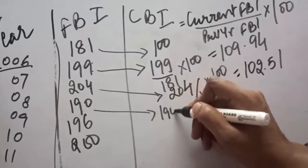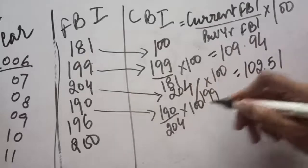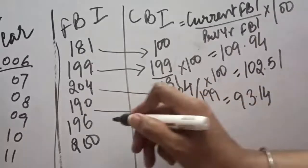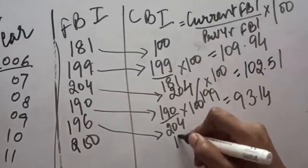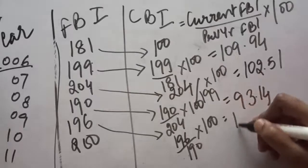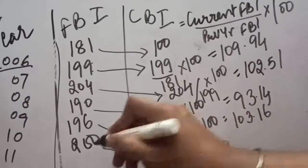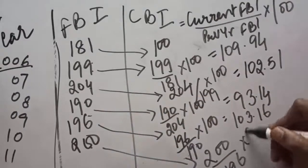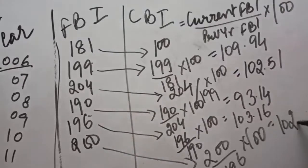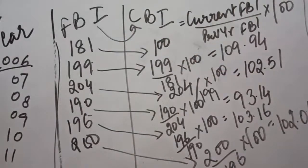For the next year it will be 190 divided by 204 into 100, that answer comes out to be 93.1. For the next year, 196 divided by 190 into 100, our answer is 103.16. And the last: current year FBI is 200, previous year FBI is 196, multiplied by 100, and the last answer will be 102.04. This is the method by which we can convert fixed base index to chain base index. The formula is: current year FBI divided by previous year FBI into 100.